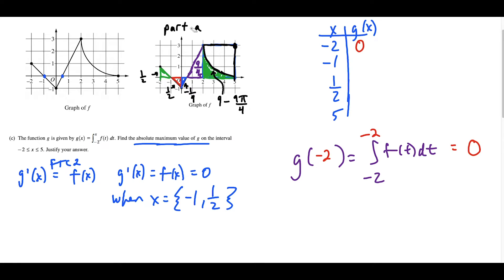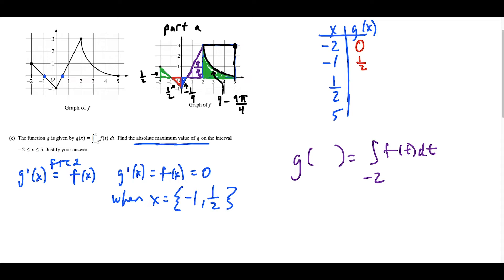g of negative 2 gives an integral where the upper and lower limits match, so it equals zero. For x equals negative 1, the area from negative 2 to negative 1 is just that single triangle, which we found to have area one half — so g of negative 1 equals one half. For x equals one half, the first two triangle areas canceled out (one half minus one half is zero) and zero minus one fourth equals negative one fourth — so g of one half equals negative one fourth.